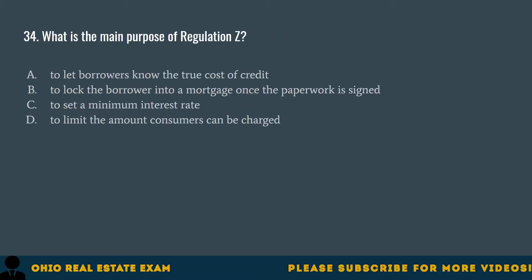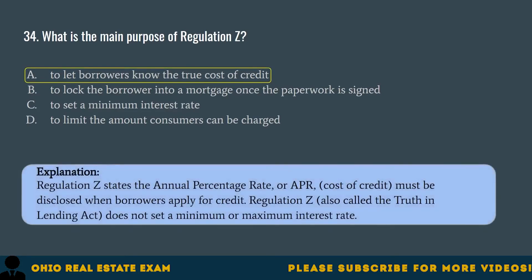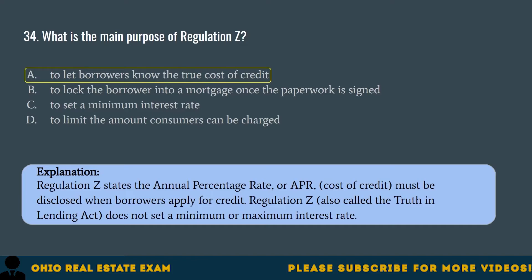Question 34. What is the main purpose of Regulation Z? A. To let borrowers know the true cost of credit. B. To lock the borrower into a mortgage once the paperwork is signed. C. To set a minimum interest rate. D. To limit the amount consumers can be charged. The correct answer is A. To let borrowers know the true cost of credit. Regulation Z states the annual percentage rate (APR) and cost of credit must be disclosed when borrowers apply for credit. Regulation Z, also called the Truth in Lending Act, does not set a minimum or maximum interest rate.